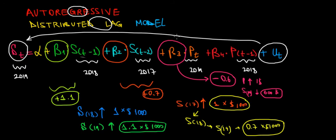Whatever the number is, that would be the partial effect of this variable, the price in 2018 on sales in 2019. That's what matters in this model.